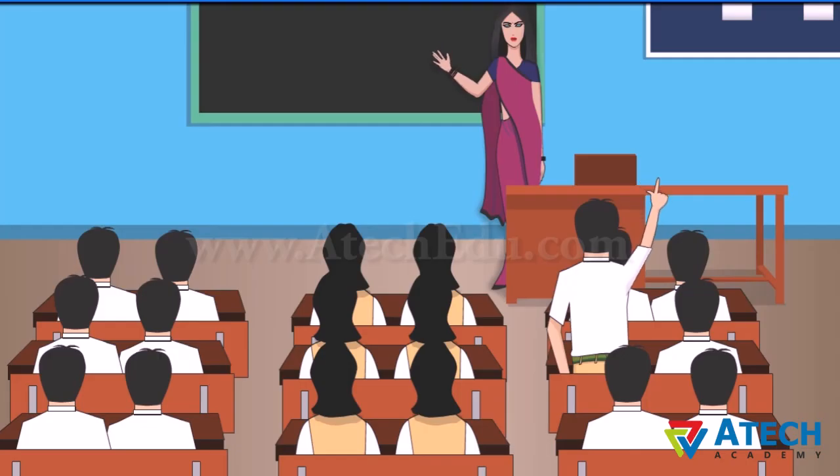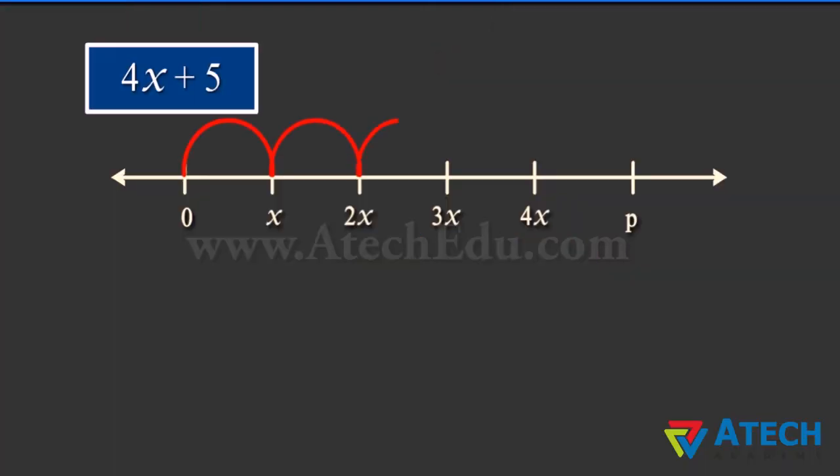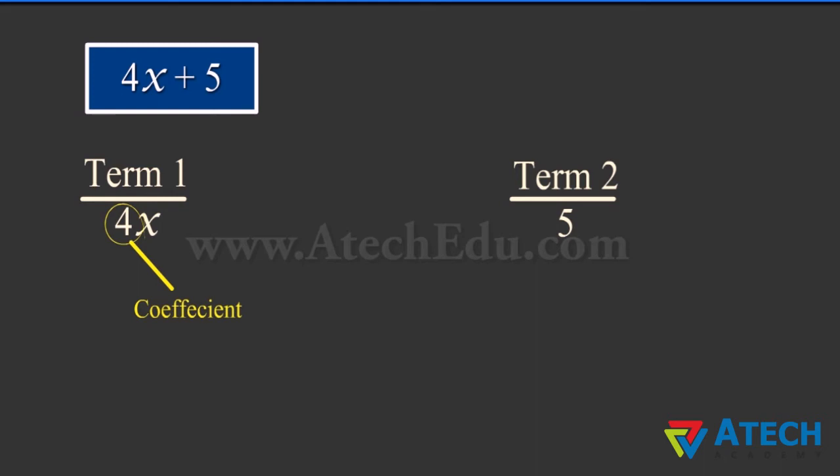What about the position of 4x plus 5? The position of 4x will be 4 times the distance of x from the origin. The position of 4x plus 5 will be 5 units to the right of 4x.